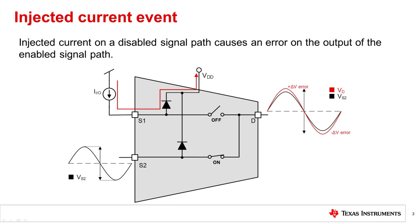In this example, S2 is the enabled signal path that is conducting a signal from the S2 pin to the D pin. Because there is an injected current at the disabled S1 pin, the voltage at that pin increases above the supply voltage, and the ESD protection diode is forward biased, therefore shifting the power supply rail. This shift in supply voltage alters the RON of the internal FET switches, causing a delta V error on the output at the D pin.